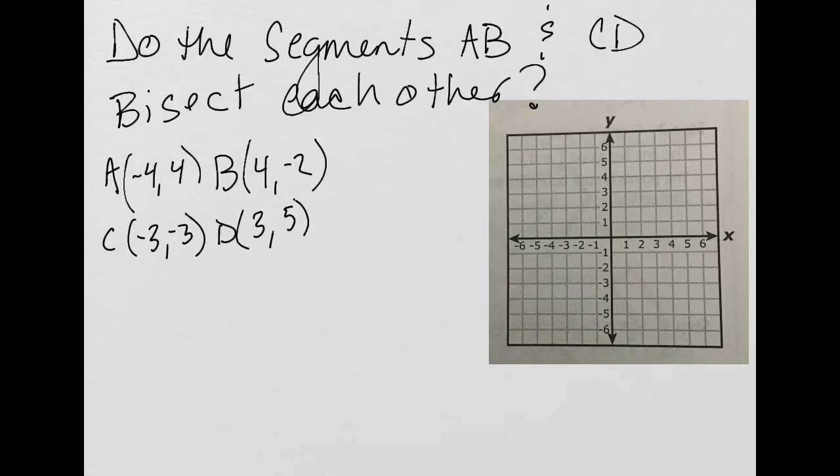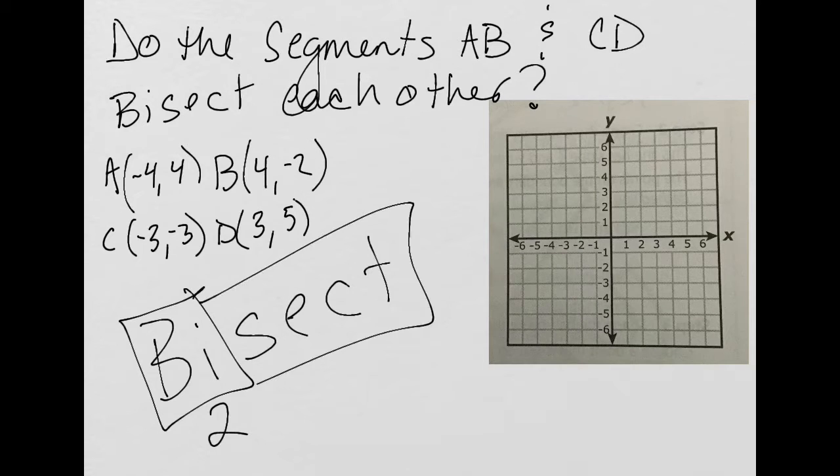So our question today is, do the segments AB and CD bisect each other? Well, when you think about the word bisect, it is literally made up of two pieces: bi, which means two, and sect, which literally means cut. So bisect literally means to cut into two equal pieces.